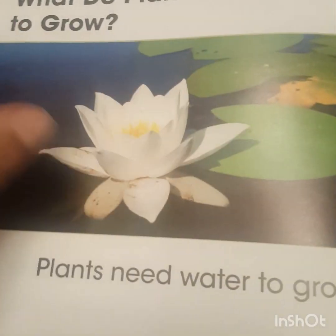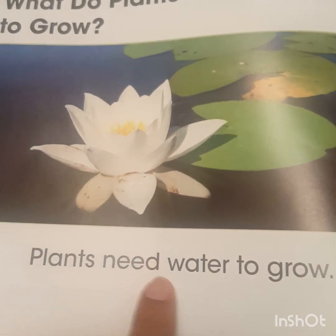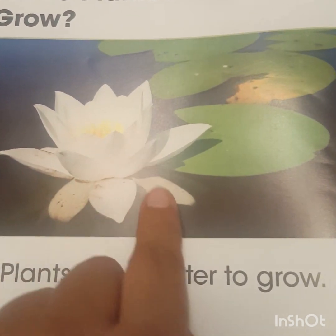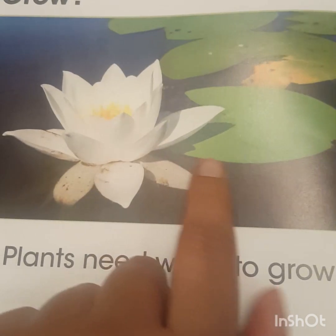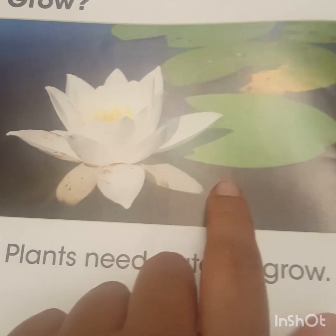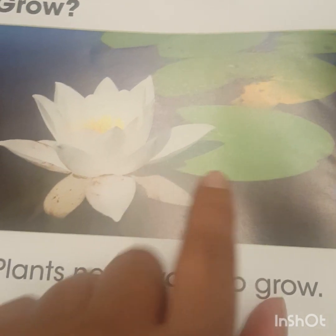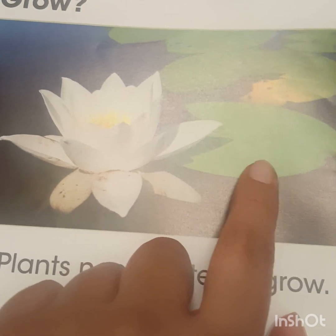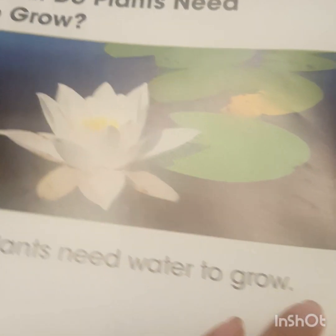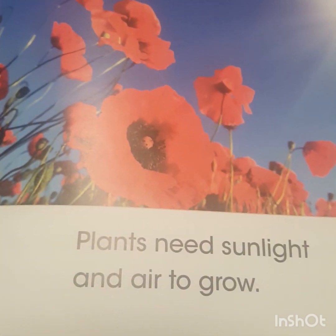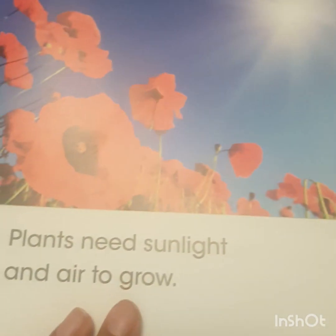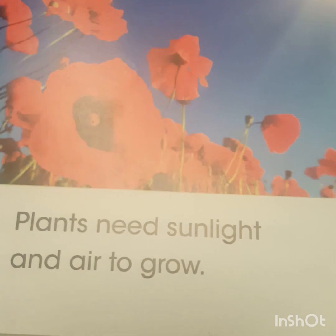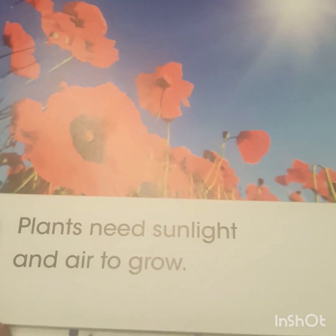Now, what do plants need to grow? Plants need water to grow. This plant here is called the promiliate and you find it in ponds. It is also known as a lily pad. You might see a frog sitting on these lily pads in a pond. Plants need sunlight and air to grow. So I learned that plants need water, sunlight, and air to grow.